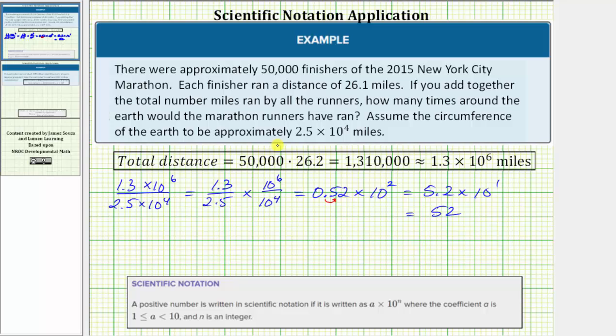So now we know the total number of miles ran would be 52 times around the earth.